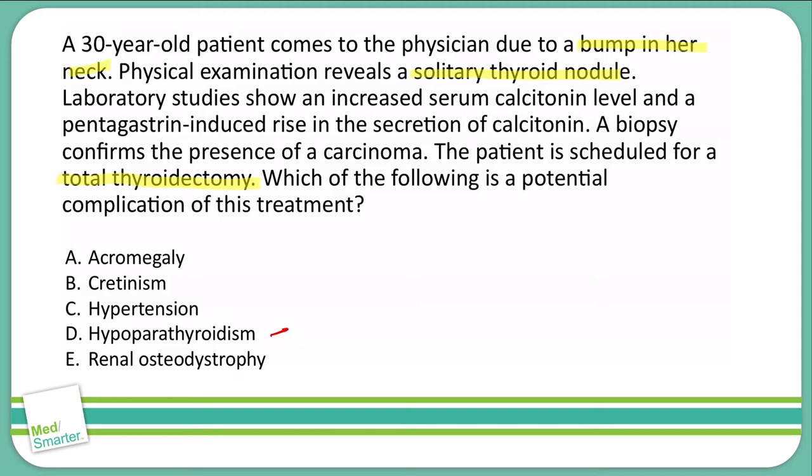A — acromegaly. Acromegaly is an excess of growth hormone, mostly occurring in adults whose growth plates have already fused. There's no association with a thyroid or a thyroidectomy in this situation. So acromegaly is not going to be my correct answer — we'll mark that off the list.